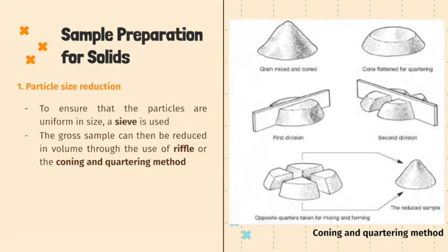Alternatively, the coning and quartering method can be used. This simple method allows the analyst to reduce the sample size without creating a systematic bias, and requires only four basic steps. First, the gross sample is piled into a conical shape. Then it is flattened into a cake. Afterwards, the cone is divided into four quarters and one quarter is selected. This is done repeatedly, just like when using a riffle, until a suitable sample volume is achieved.